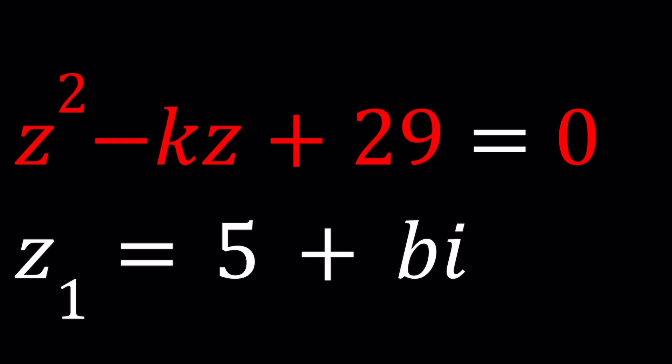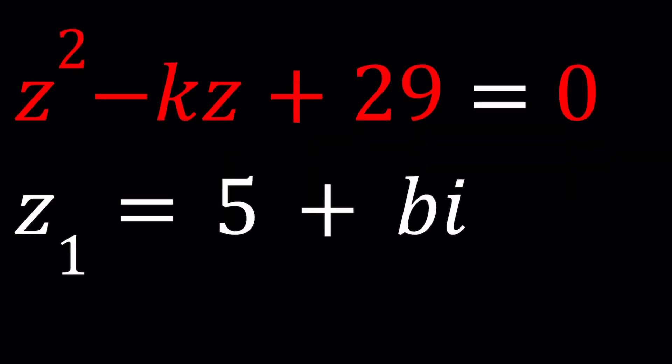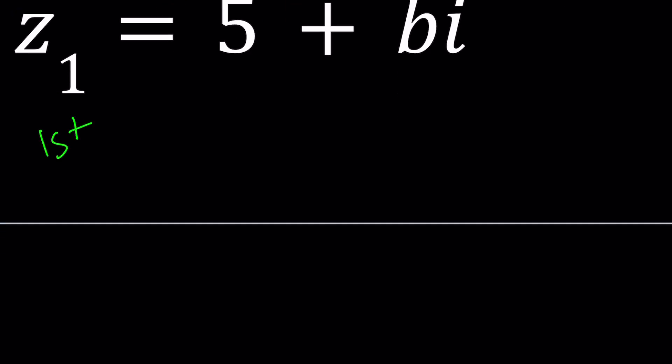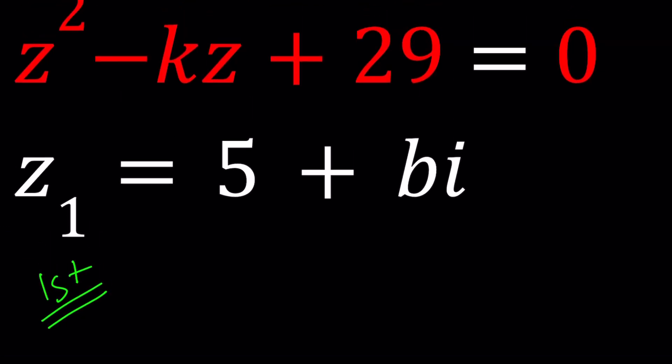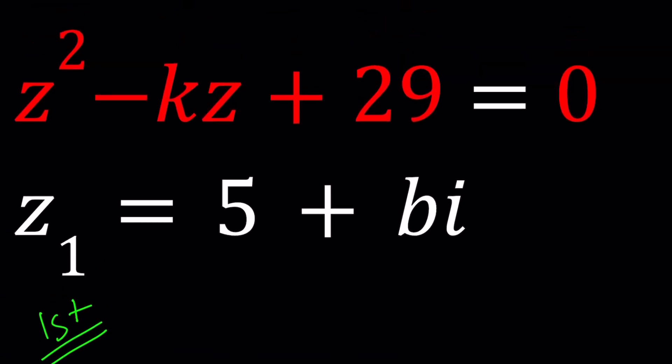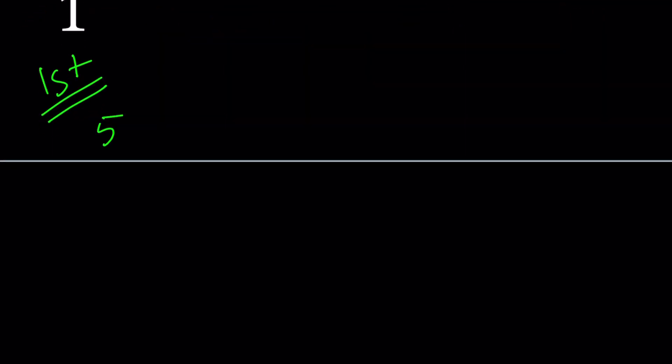Now we're going to find the k values and the b values and I'll be presenting two methods. First method: since one of the roots of this equation is given and the roots satisfy the equation, let's go ahead and plug it in. Replace z with 5 plus bi. And that's supposed to give us 0. Let's go ahead and expand everything and arrange the terms and now we're going to be looking for k and b values.